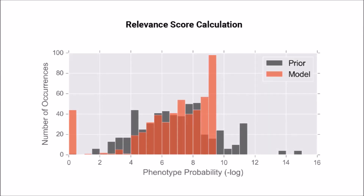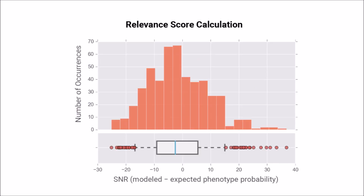We introduce a new relevance score calculation by comparing the model probability to a prior expectation. This peak represents symptoms that occur with greater frequency in the model than in the prior. By computing the magnitude of the difference using signal-to-noise, we can use the distribution of differences to isolate the symptoms that are most likely to be relevant.